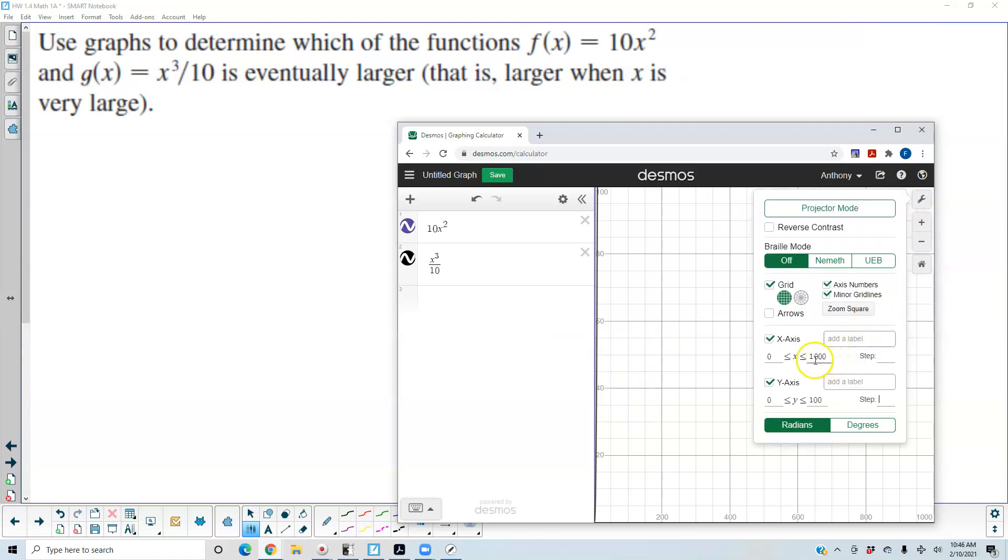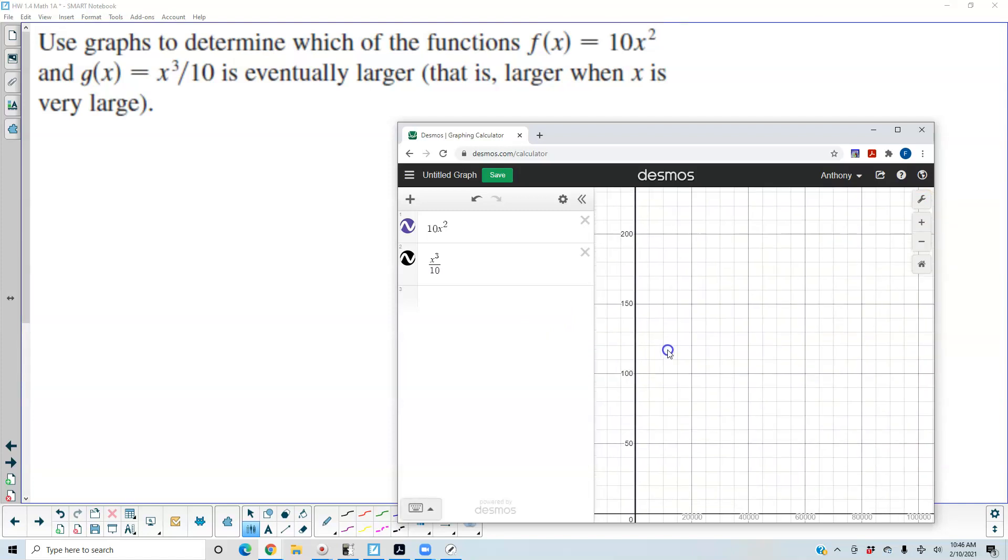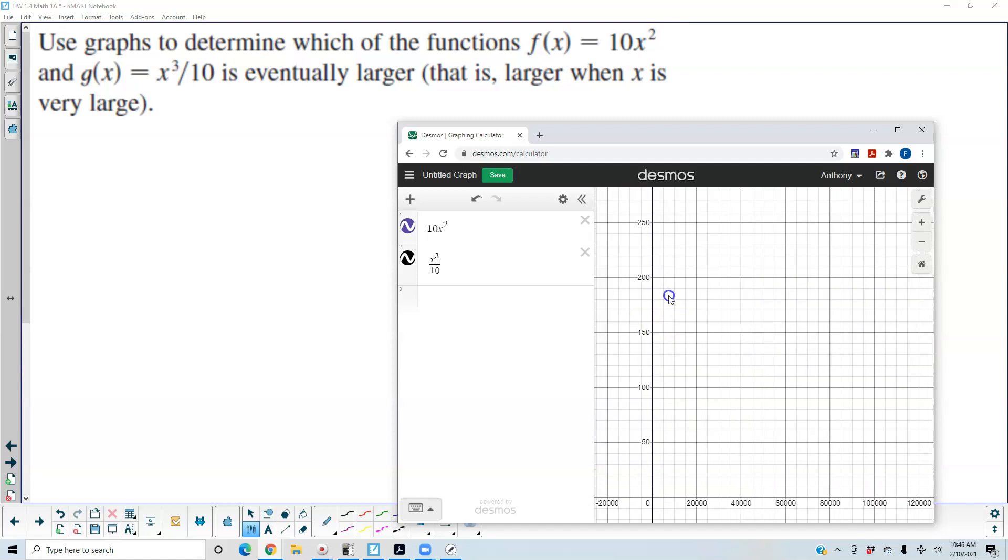So we might need to go a little higher. So here, we might need to go to, let's say, 100,000. Keep this at 200, maybe. So we still can't see what's happening here.